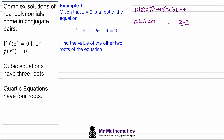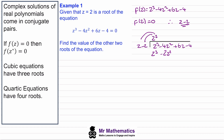By the factor theorem, z minus two must be a factor. We can use long division to find the quadratic factor. We divide z cubed by z and get z squared. Multiplying out gives z cubed minus two z squared. The difference in the quadratic terms is negative two z squared, and we drop down the linear and constant terms. Dividing negative two z squared by z gives negative two z.